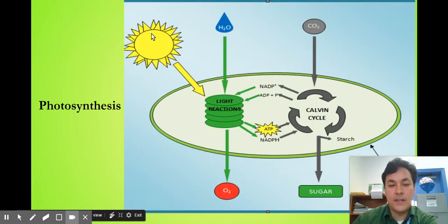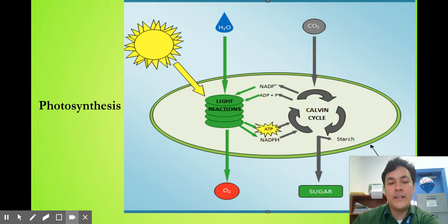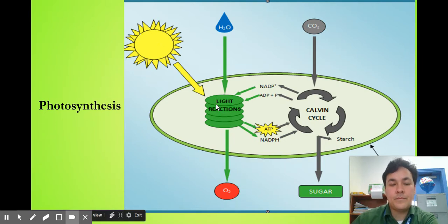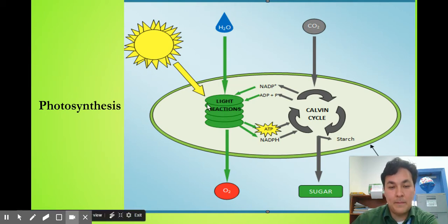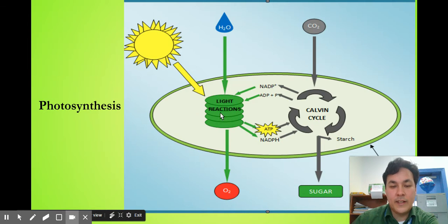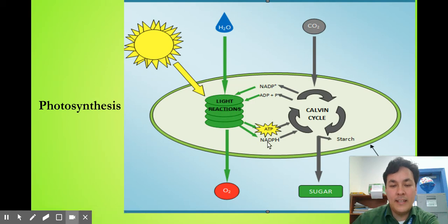I love this picture because it gives you a good reminder of the light reactions and the Calvin cycle before you dive very deeply in. You always want to see the big picture. We've got sunlight hitting the chloroplasts in our plants. Inside the chloroplasts are these flat green pancakes called thylakoids. Thylakoids are special — they have chlorophyll in them. The chlorophyll is going to get excited, do the electron transport chain, and make some ATP.